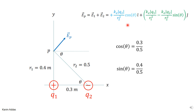Never substitute numbers at the beginning — always leave numbers till the end. For cosine theta and sine theta, using the triangle formed by the geometry: cosine theta is the adjacent 0.3 over the hypotenuse 0.5, and sine theta is the opposite 0.4 over the hypotenuse 0.5. These are easy to get from the figure.